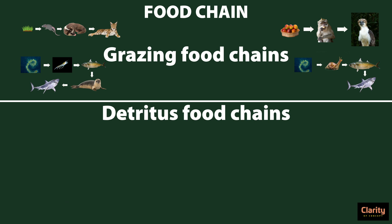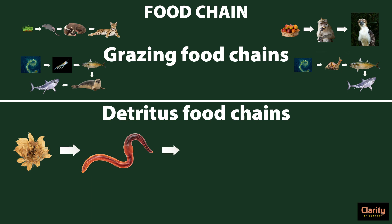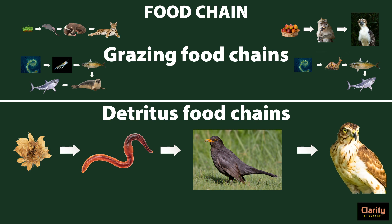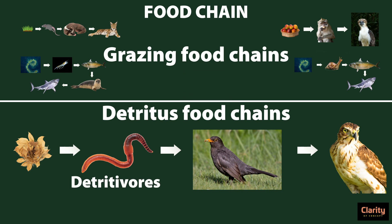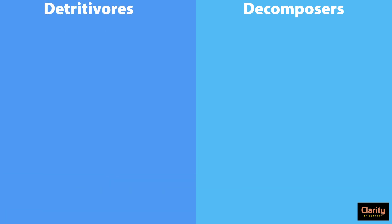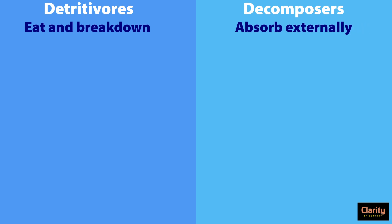There is another type called the detritus food chain. It starts from dead, decaying organic matter. Fallen leaves, which are dead decaying organic matter, are eaten by earthworms; earthworms are eaten by blackbirds; and blackbirds are eaten by hawks. Here, earthworms are primary consumers — they are called detritivores. It is to be noted that there is a difference between decomposers and detritivores. Detritivores eat dead organic materials, whereas decomposers do not eat but absorb nutrients through external chemical and biological processes, absorbing nutrients at the molecular level.